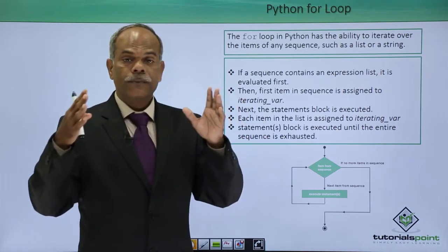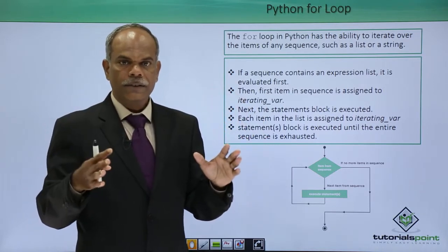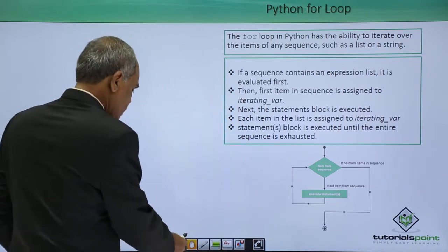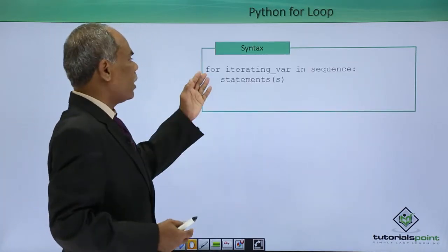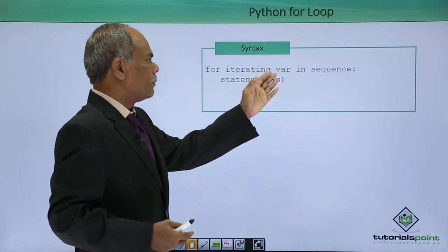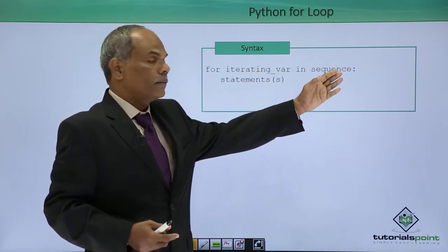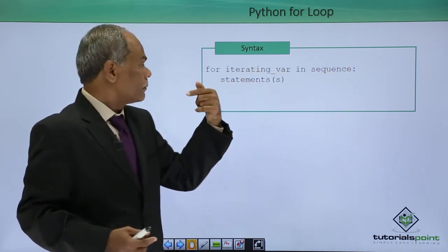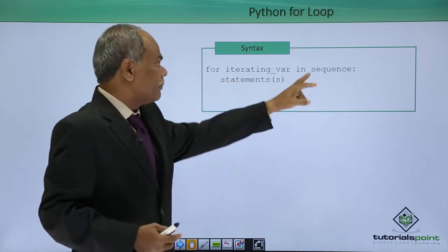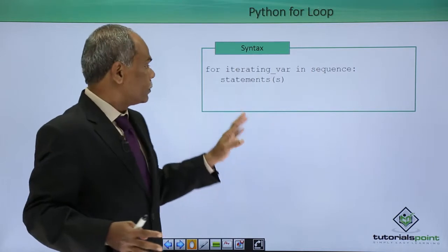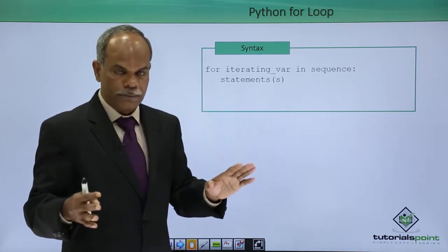How that for statement is written in Python is shown in this syntactical representation: for iterating variable in sequence. So, it will take up the first value, perform these statements and go to the next till the time this sequence is present. So, this is a syntactical representation of for statement.